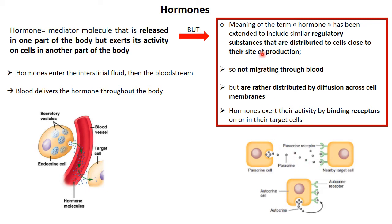In the new definition of the term 'hormone,' the meaning was previously restricted only to endocrine hormones — chemical messengers transported by the blood circulation to reach their target cell. More recently, this meaning has been extended to include chemical messengers that act in an autocrine or paracrine way, distributed to neighboring cells and not necessarily migrating through the blood circulation.